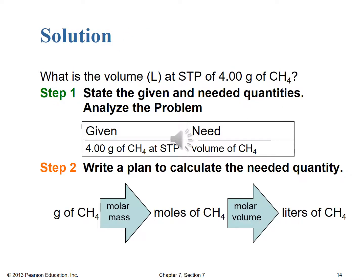Looking at the setup: in step one, you're given 4.00 grams of methane gas and that you're at STP. You need the volume of methane gas at those conditions. In step two, write your plan: starting in grams of methane, use molar mass to convert into moles of methane. Once you're in moles of methane, the problem is pretty trivial — use the molar volume, the 22.4 liters over one mole of methane form, to find the liters of methane gas that that mass would relate to at STP.